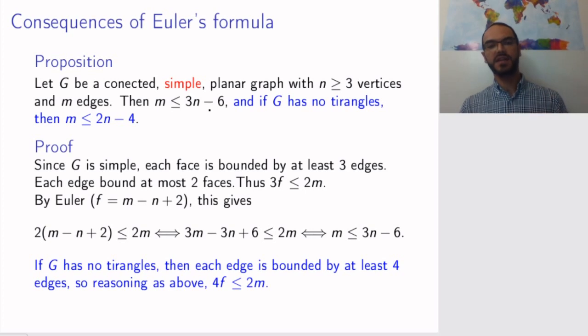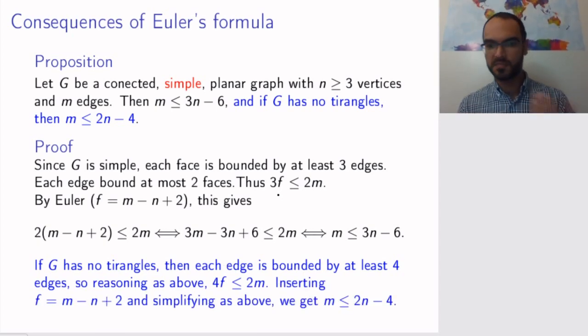Now if the graph has no triangles, then we can repeat the exact argument again. But now we know something more. Previously, we assumed that each face is bounded by at least three edges. But the face bounded by three edges, this means we have a triangle. So if we don't have a triangle, then each face has to be bounded by at least four edges. So we get 4f that is smaller than or equal to 2m, instead of 3f as we did before. And simplifying doing things as above, we get that m is at most 2n minus 4.